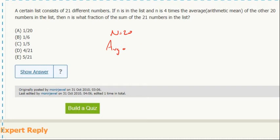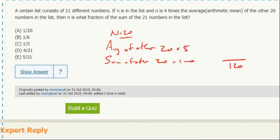That means the sum of the other 20 equals 100. So that means the sum of all the numbers including n is 120, and so n is what fraction of all those numbers? One-sixth.